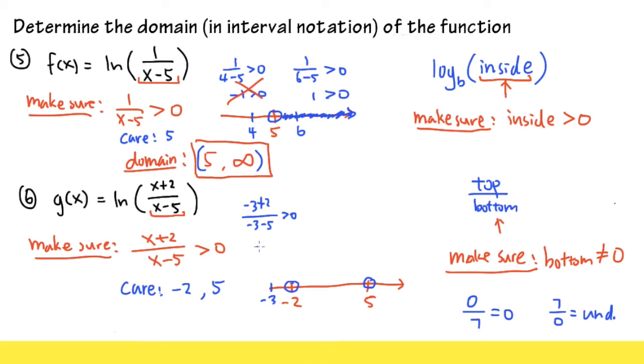On the top, we have negative 1, right? Negative 3 plus 2. That's negative 1. Over negative 3 minus 5. That's negative 8. Is this greater than 0? What's negative 1 divided by negative 8? That's positive 1 over 8. So, we are taking this part of the number line. So, anything from negative 2 toward the left is going to be on the domain.